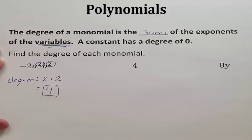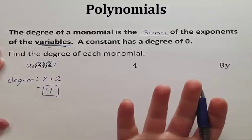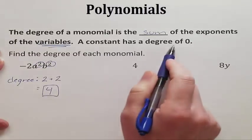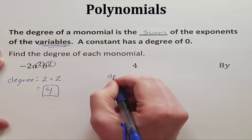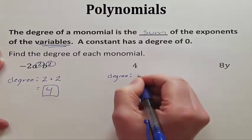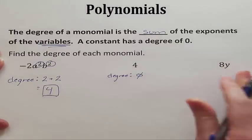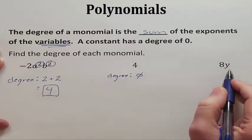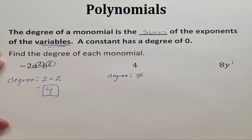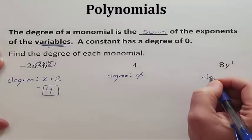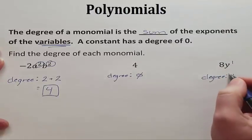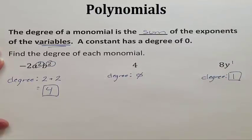This is a fourth degree monomial. The next monomial has no variables at all — if there are no variables, we're just looking at a constant, and its degree is 0. For the last monomial, the variable doesn't have a written exponent, but its exponent is 1. Since it is the only variable, we just use the exponent of 1, so its degree is 1.